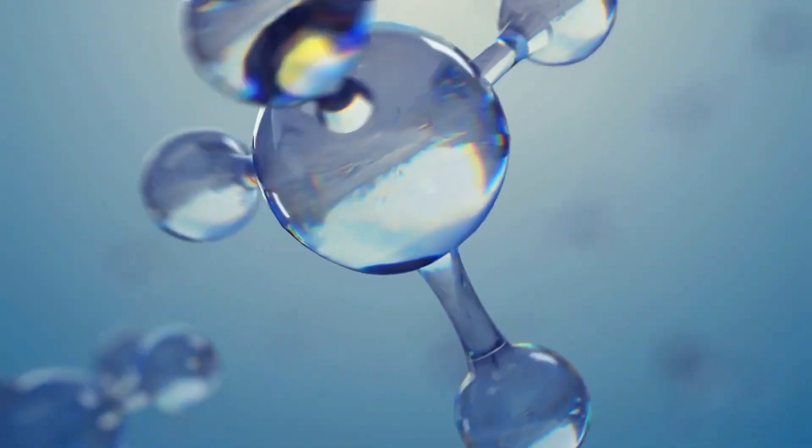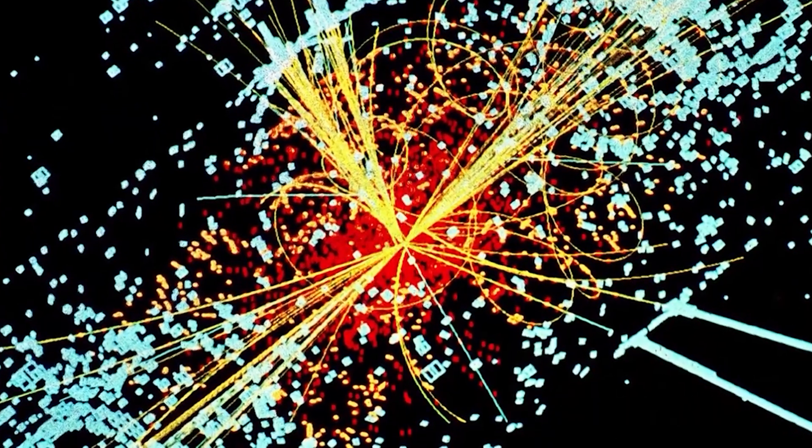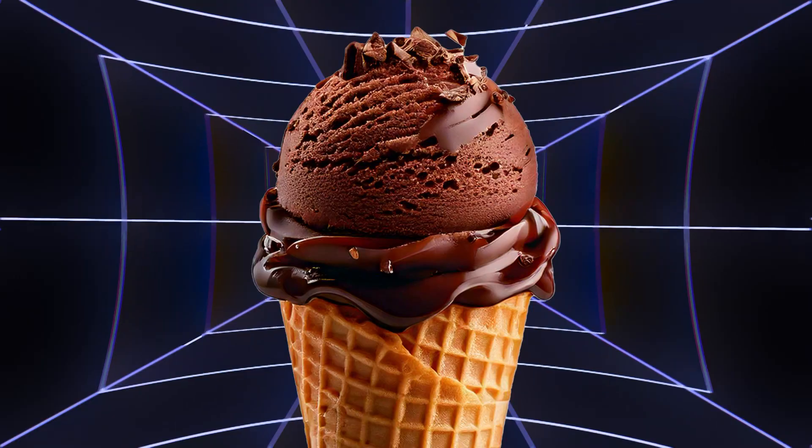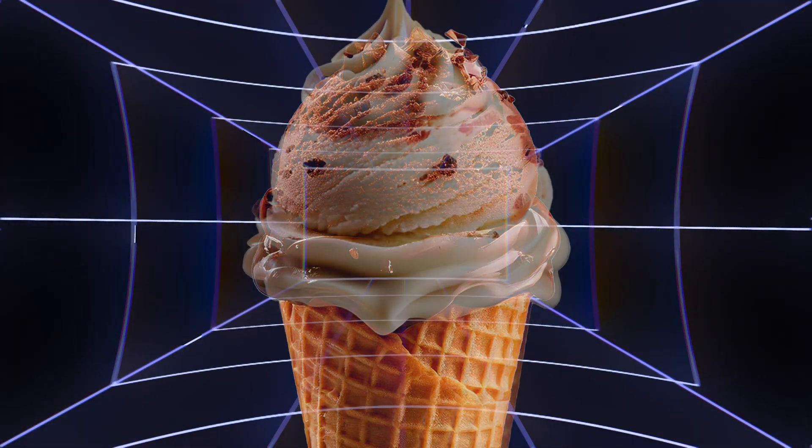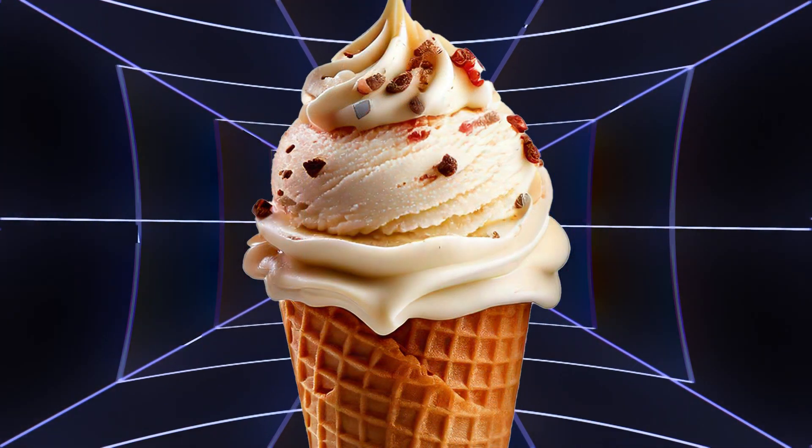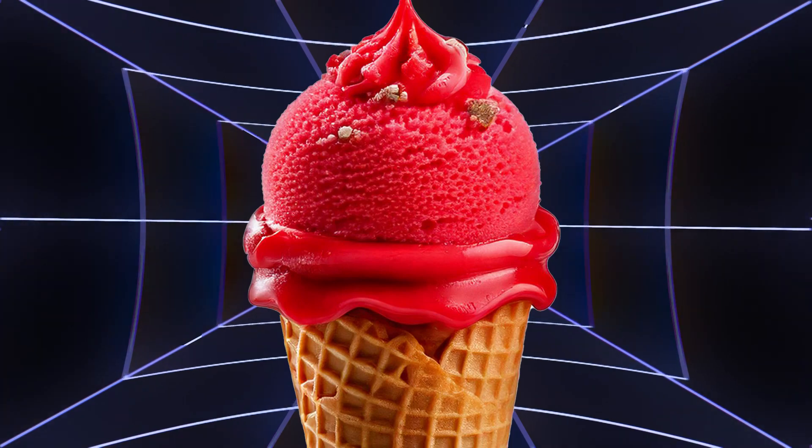Yet as they travel, they exhibit a mind-bending behavior called oscillation, shifting from one type to another. Imagine starting with chocolate ice cream, only to find it's become vanilla a few steps later, and then strawberry by the time you sit down.